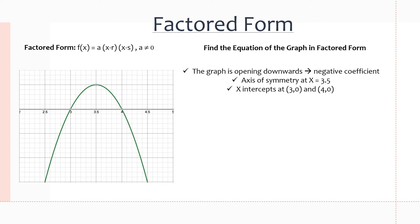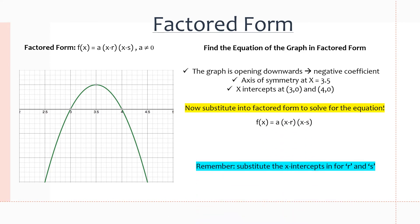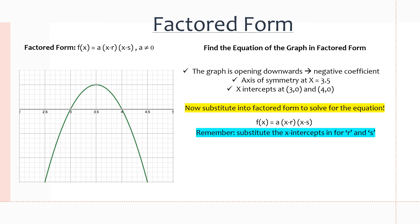So now we have information gathered about this graph, and we're going to be substituting it into factored form to solve for the equation. So this is factored form over here, but you need to remember that you substitute the x-intercepts in for r and s, not for x and f(x). For that, we will be using a particular point on the graph to solve for a, and then substitute that back into the equation.